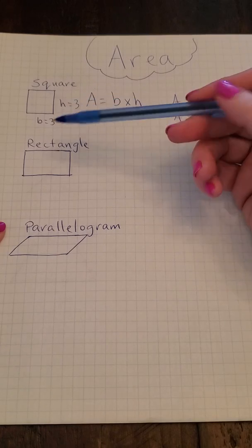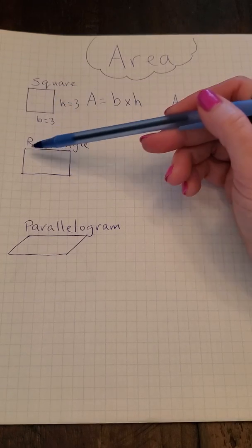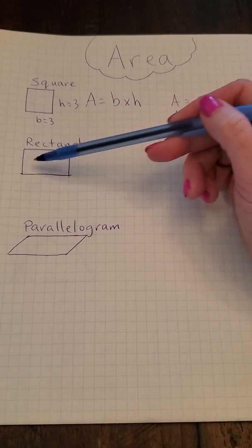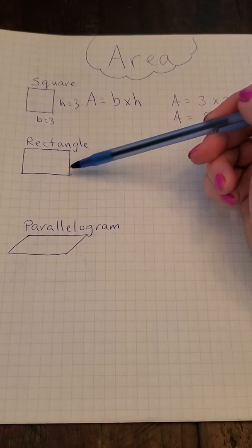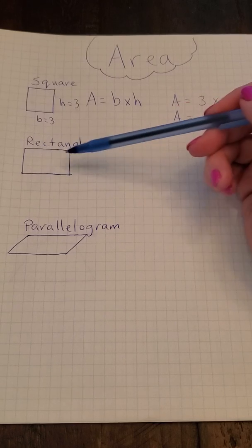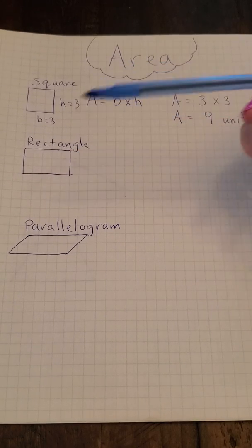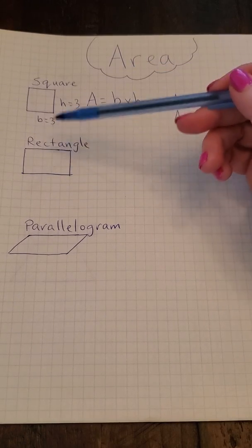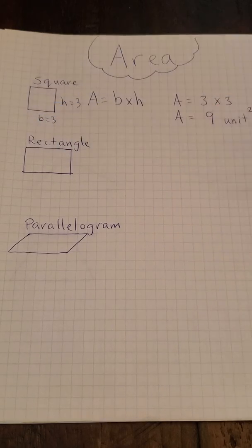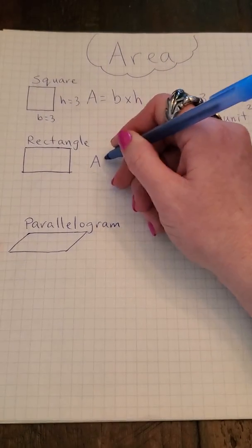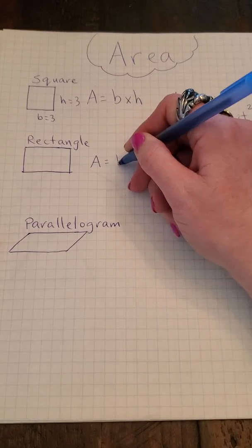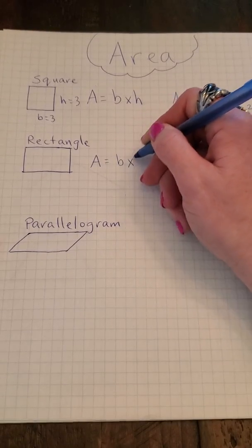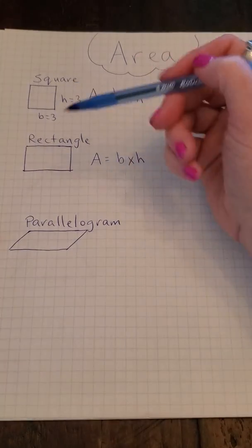A rectangle is very similar to a square. It has four 90-degree angles and two sets of parallel lines, but the thing that makes it a little different is that it doesn't have four equal sides. But it uses the same formula: area equals base times height.